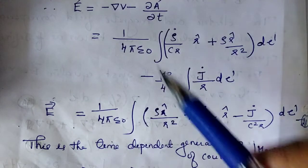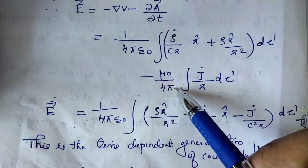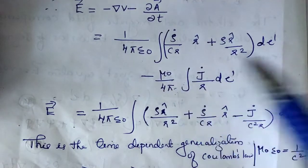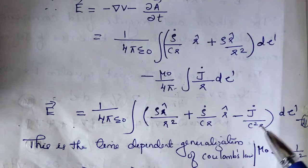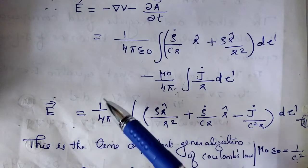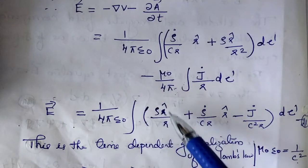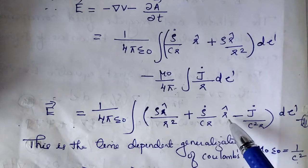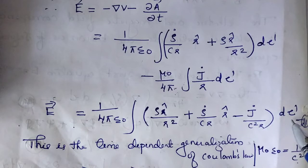Therefore the electric field vector E equals minus del V minus dou A by dou t. Taking 1 by 4 pi epsilon 0 common, and using mu0 equals 1 by (epsilon 0 c squared), the result is: vector E equals 1 by 4 pi epsilon 0, integral of [rho r-hat by r squared plus rho-dot r-hat by cr minus J-dot by c squared r] d-tau prime.